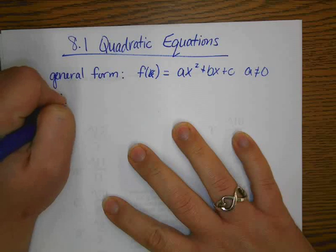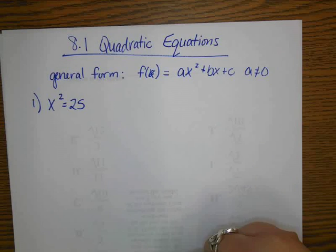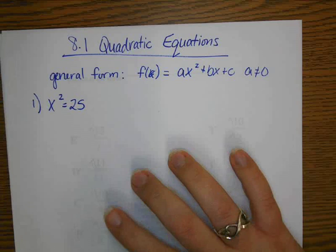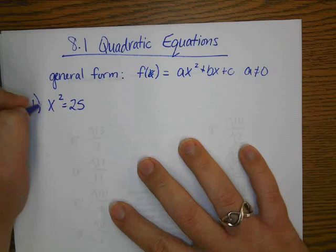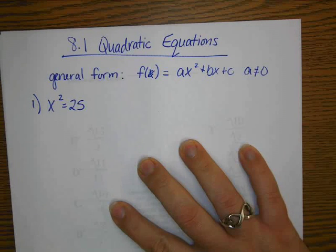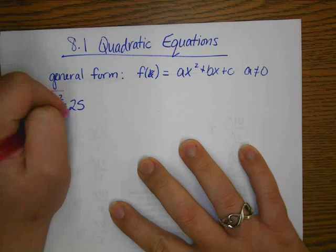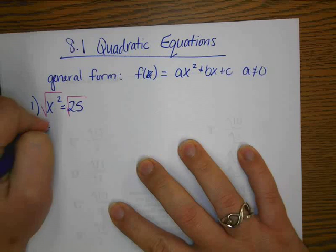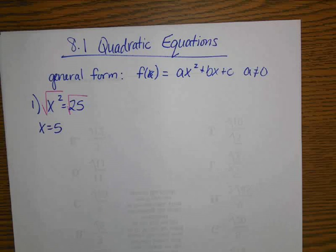So, for our first example, if we have x squared equals 25, then we know we can undo squaring something by square rooting both sides. So we can square root both sides, and we get x equals 5. But part of the problem is, and some of you might recognize this, this isn't always giving us all of our solutions.